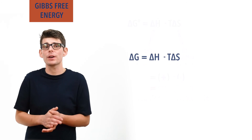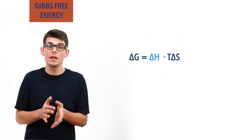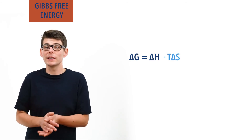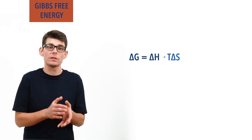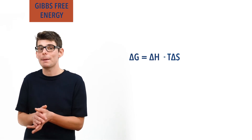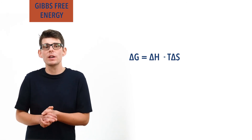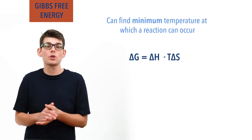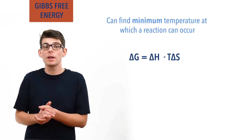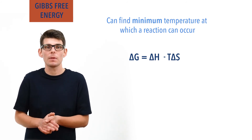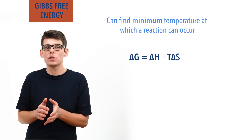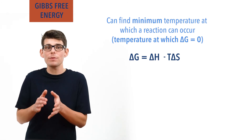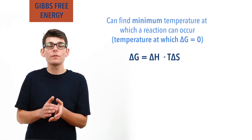Whether a reaction will occur is based on the enthalpy change delta H and the effect of entropy change T delta S. These rules also show how changing the temperature of a system can affect whether a reaction can happen. With further rearrangement, we can use the Gibbs free energy equation to find the minimum temperature at which a reaction can occur. Remember, Gibbs free energy change must be negative — so the temperature at which delta G equals zero is the absolute minimum temperature it could be. Any lower and the Gibbs free energy value would become positive, meaning an unfeasible reaction.